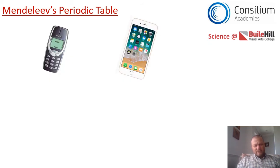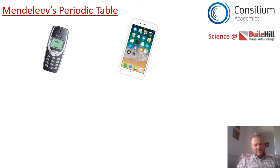If I give you the choice of those two phones, which one would you go for? I'm pretty sure it'd be for the iPhone on the right-hand side. Your parents probably had to make do with the one on the left when they first got a mobile phone — the Nokia. But if scientists and engineers hadn't built that Nokia, they wouldn't have been able to develop the technology we now use in the iPhone. For things to improve, scientists need to learn from one another and develop ideas, and that's exactly what happened with the Periodic Table.